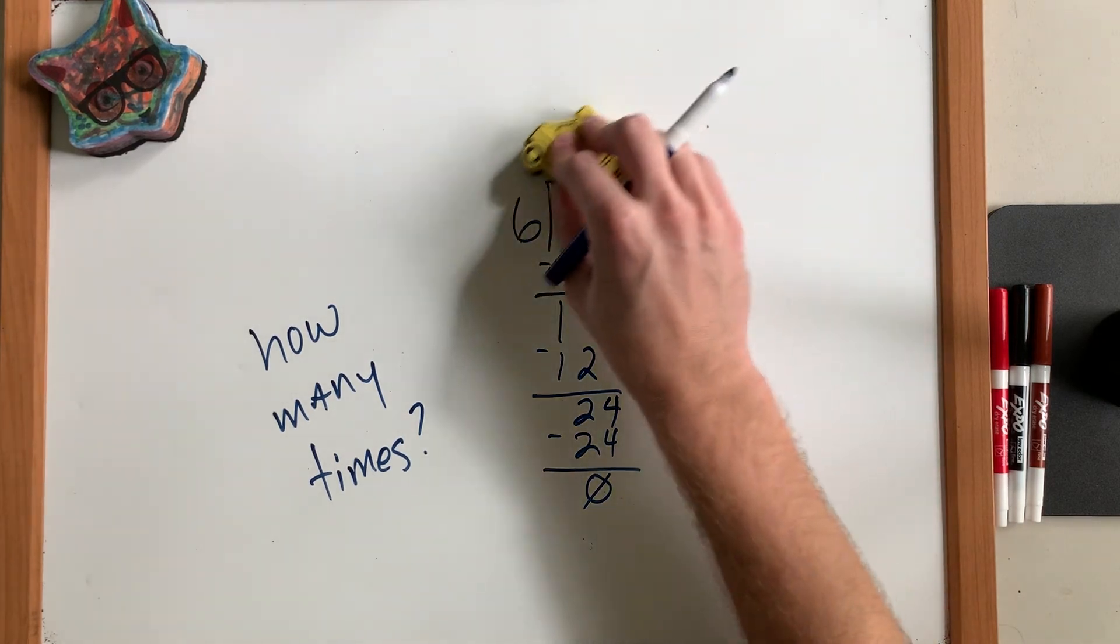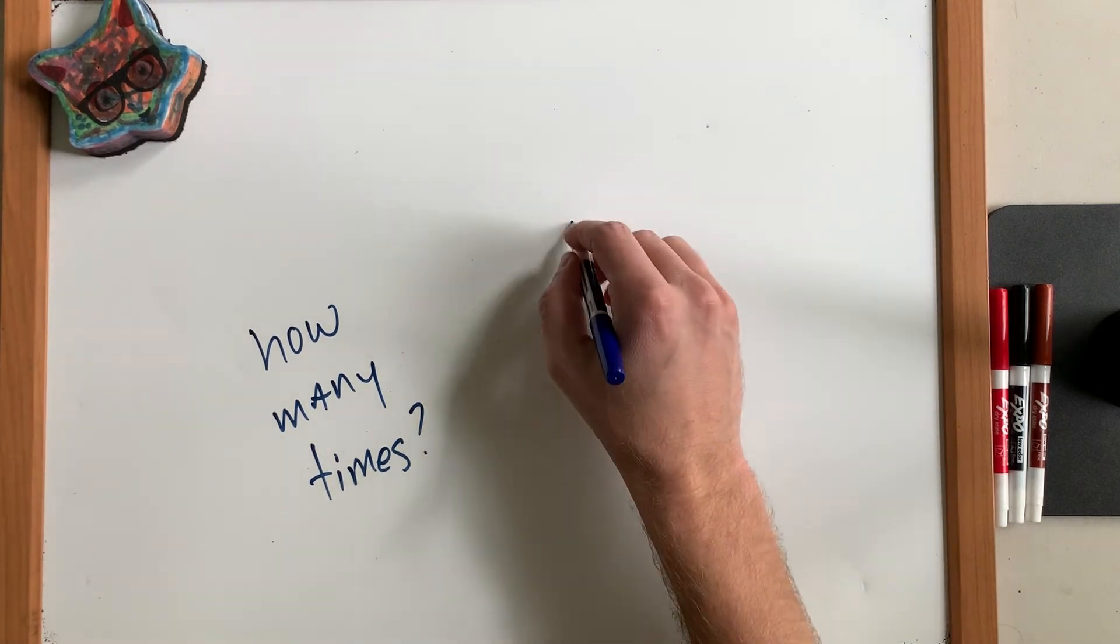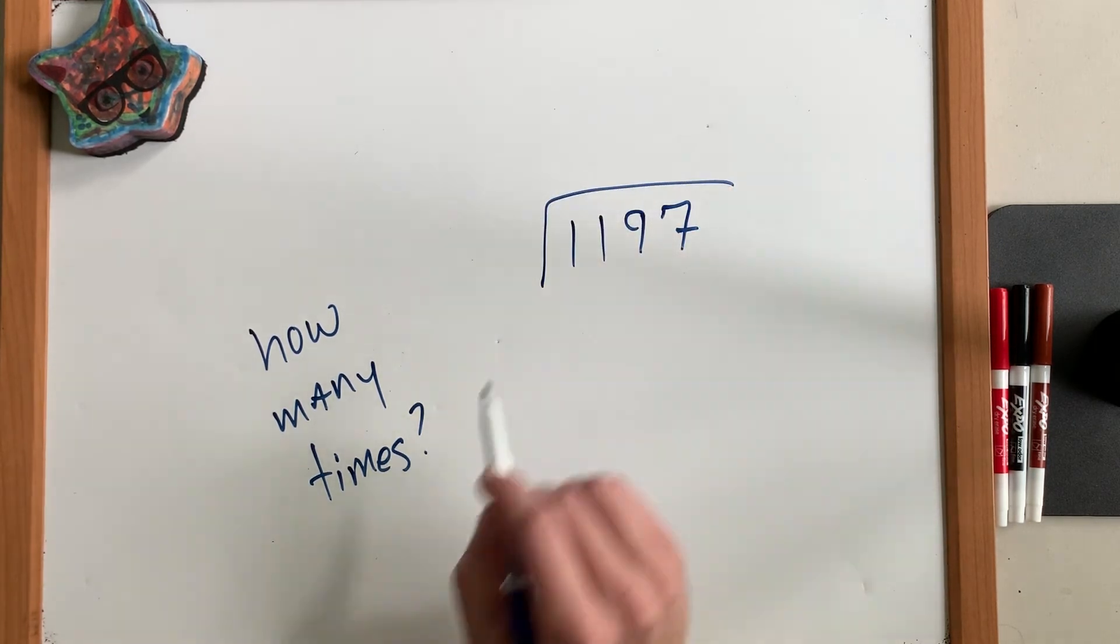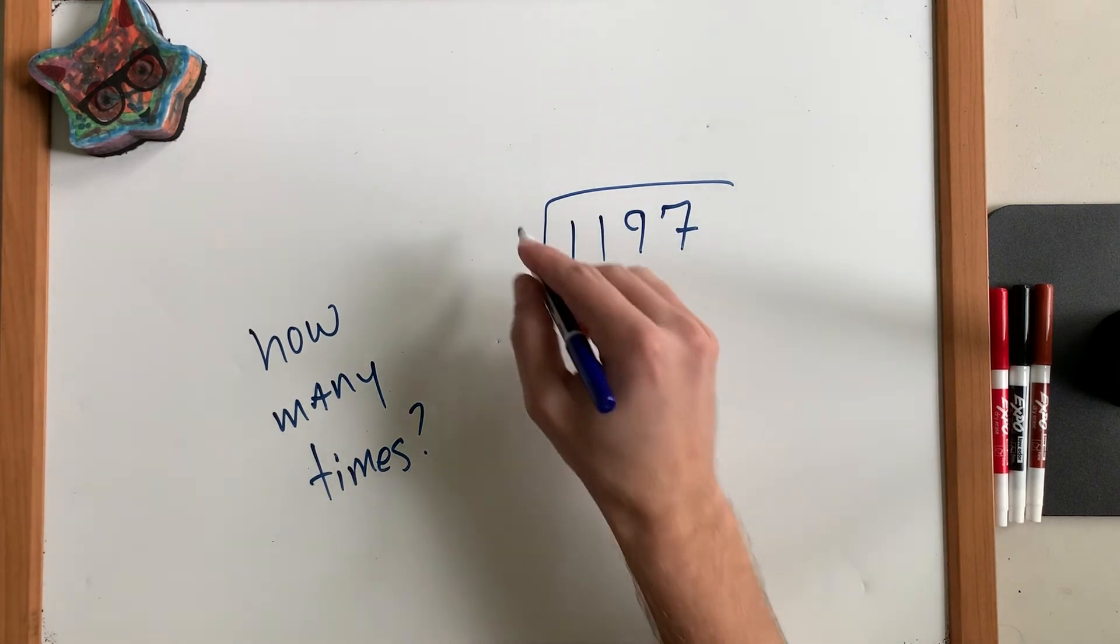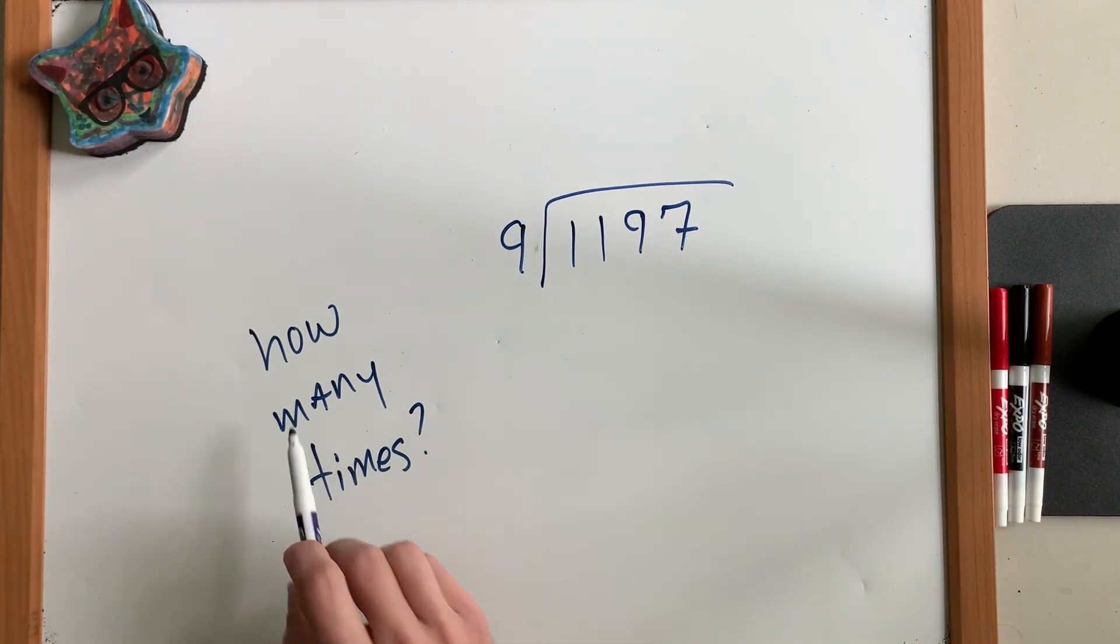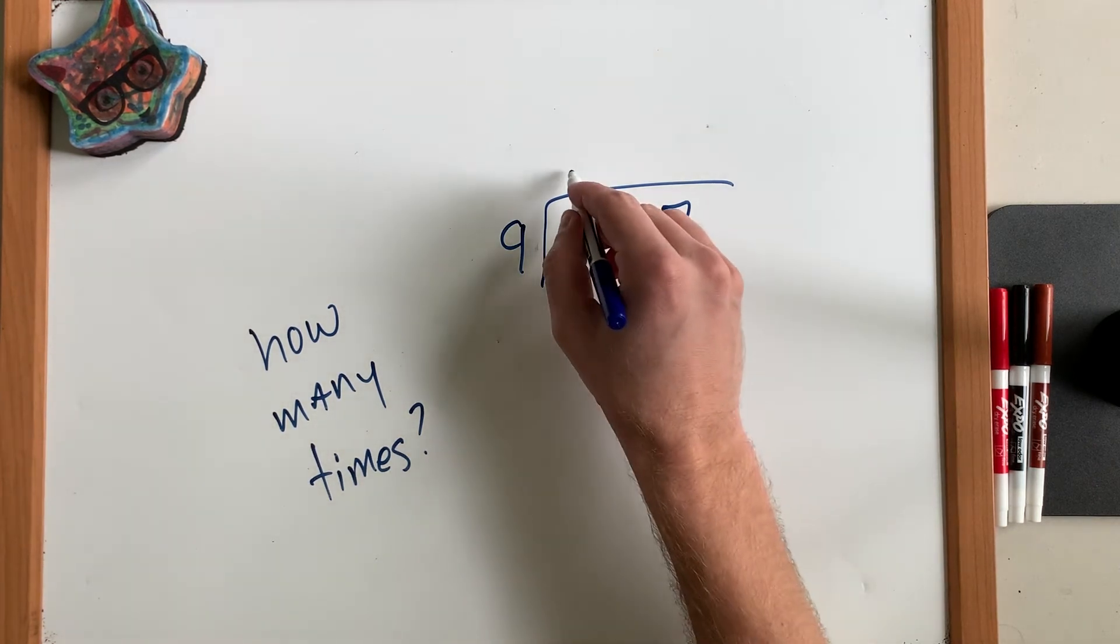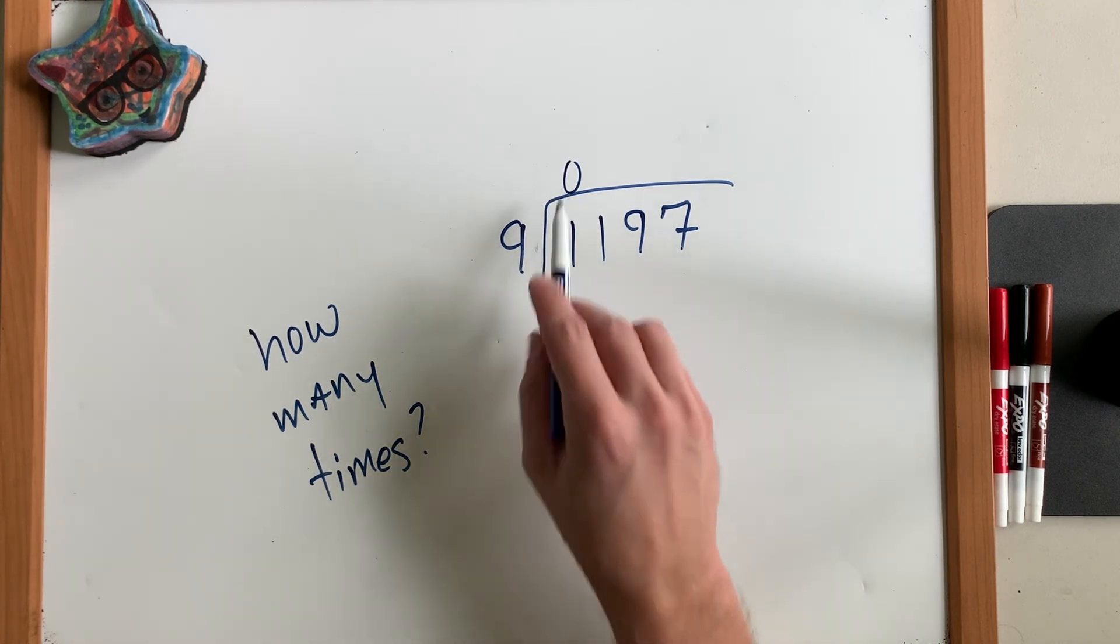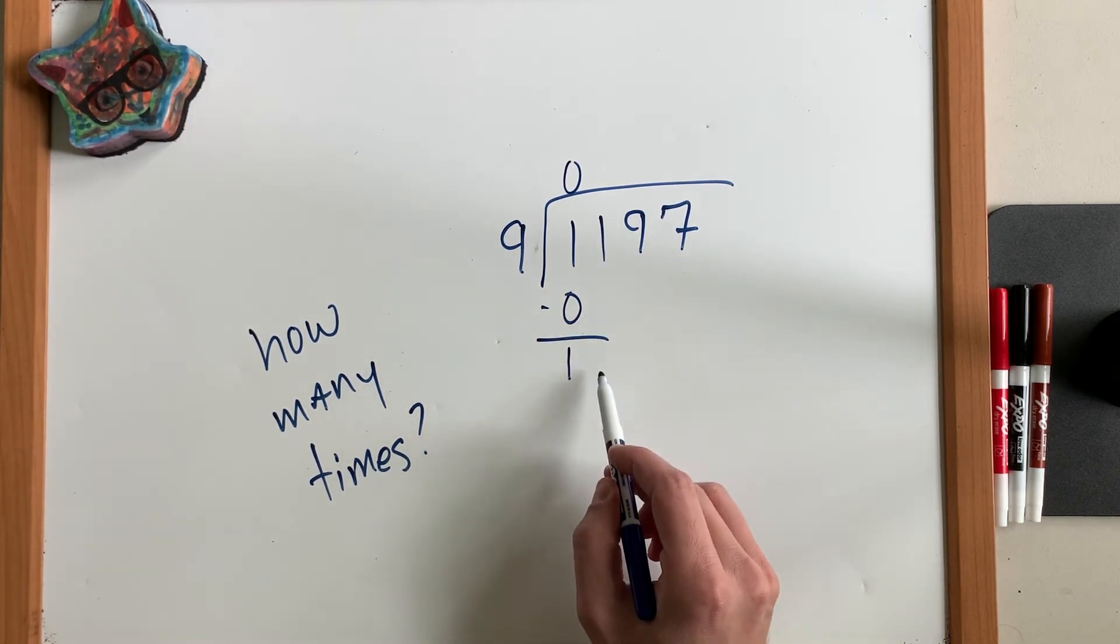Let's look at one last example with numbers that are even a little bit bigger. And we're going to take the number 1,197 and we're going to divide it by 9. So we're going to ask, how many times does 9 fit into the number 1? It doesn't. You can't take 9 of something and fit it into something that's meant for only 1. 9 times 0 is 0. Let's subtract. And we get 1. Now we're going to bring down the next digit.